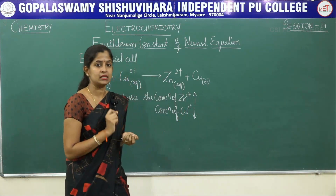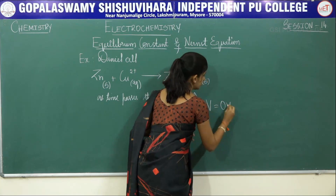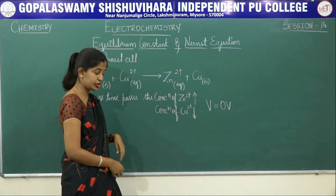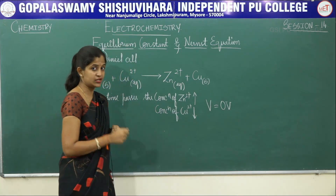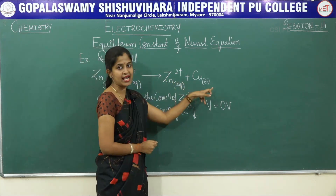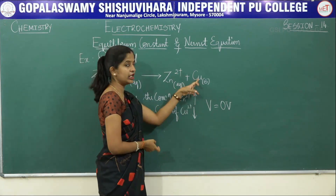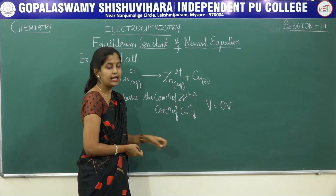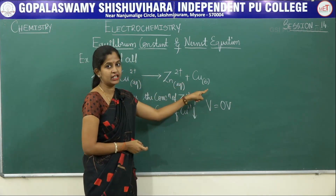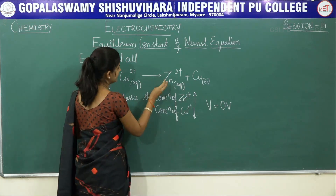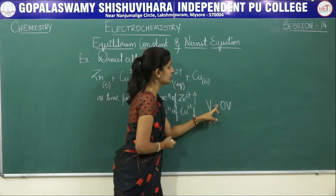At a particular time, the voltmeter starts to show a reading of 0 volts, which means there is no electric current passing through the Daniel cell. This means that the cell reaction has attained an equilibrium state. The reaction goes on as time moves — zinc ion concentration increases, copper ion concentration decreases — until at a particular instance the voltmeter shows 0 voltage, meaning the reaction has attained equilibrium.